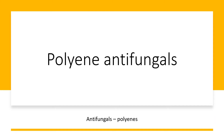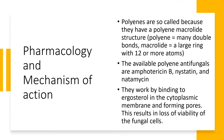We are going to talk about the polyene antifungals, an important class of antifungal agents. First, we'll talk about the pharmacology. These polyene antifungals have the polyene macrolide structure. Polyene means they have many double bonds. Macrolide means they have a large macrocyclic ring, usually more than 12 atoms. Because of that structure, we call them polyene macrolide antifungals.